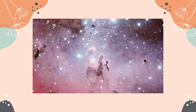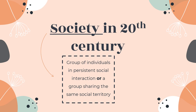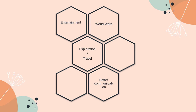Now let's proceed to the last part of this subtopic, which is Society. Society can be defined as a group of individuals in persistent social interaction, or a group sharing the same social territory. Society is always closely related to science and technology. In the 20th century, society became much more advanced due to the rapid growth of science and technology, which helped people do their daily tasks better. There were also many social changes during this period. In the early 20th century, society was introduced to printed media, while later generations were mostly exposed to electronic communication devices. The advanced growth of science and technology also caused competition between nations that ended up causing world wars, greatly affecting society.